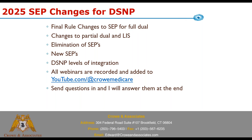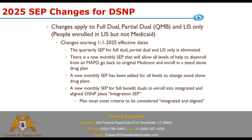We'll talk about changes to partial duals and LIS, the elimination of the quarterly SEP — yes, it's gone — the new SEPs they put in, D-SNP levels of integration, and why that matters depending on the state you're in. These changes apply to everybody: full duals, partial duals, QMBs, people who are not in Medicaid, and LIS-only. They apply to different degrees.